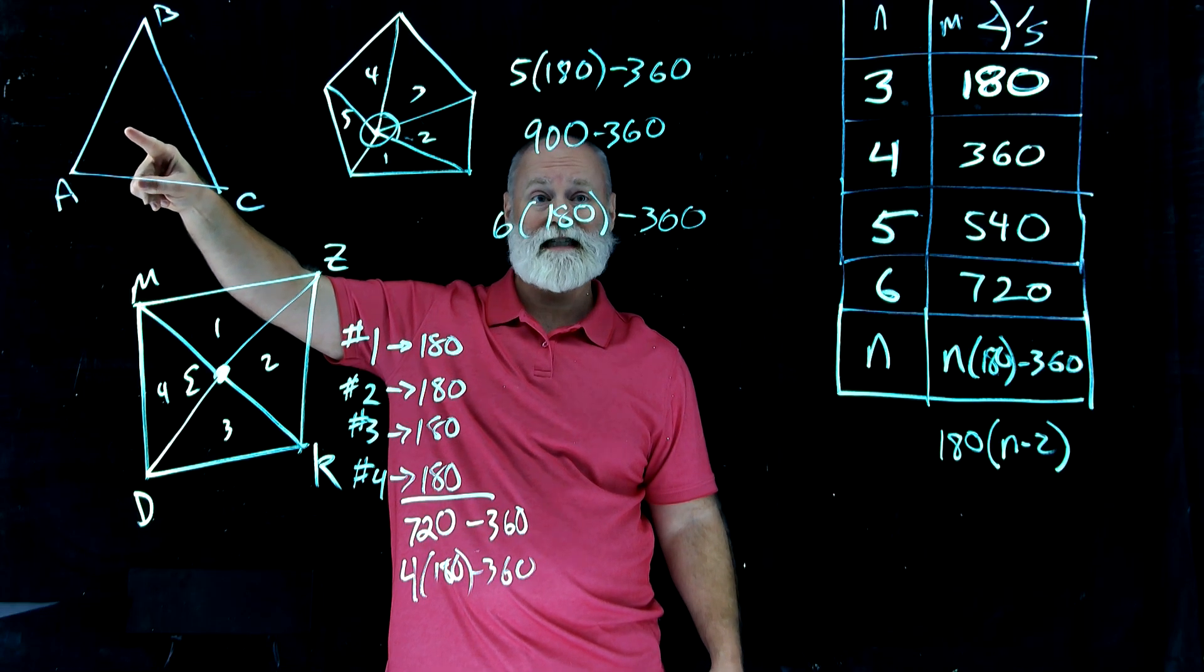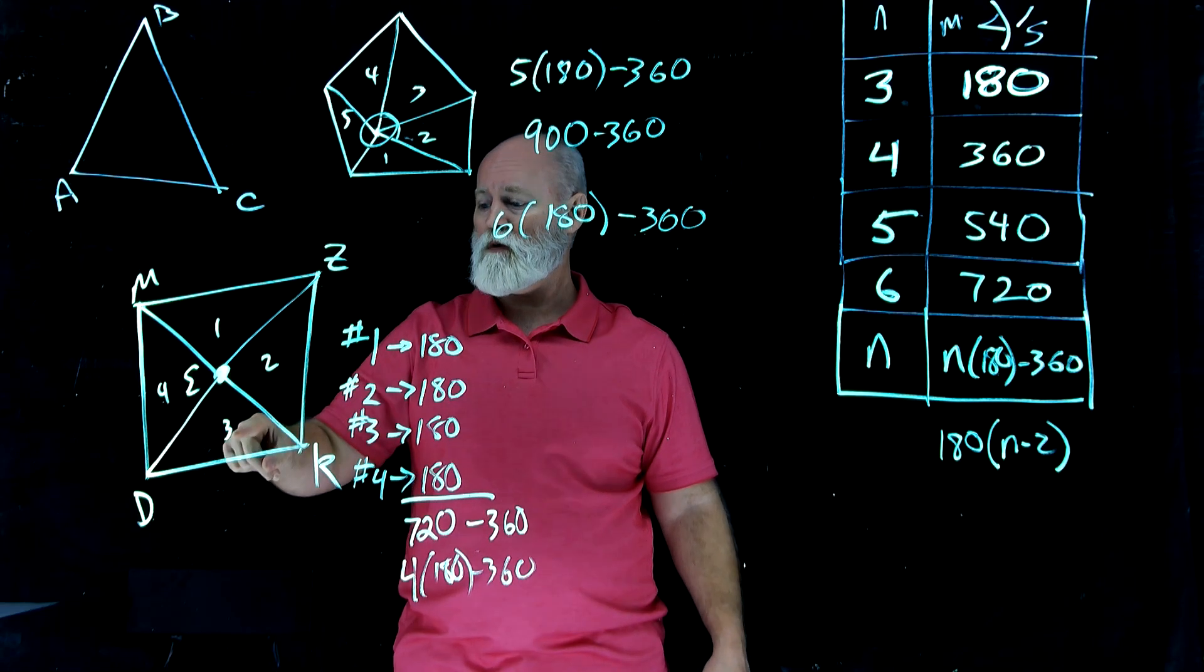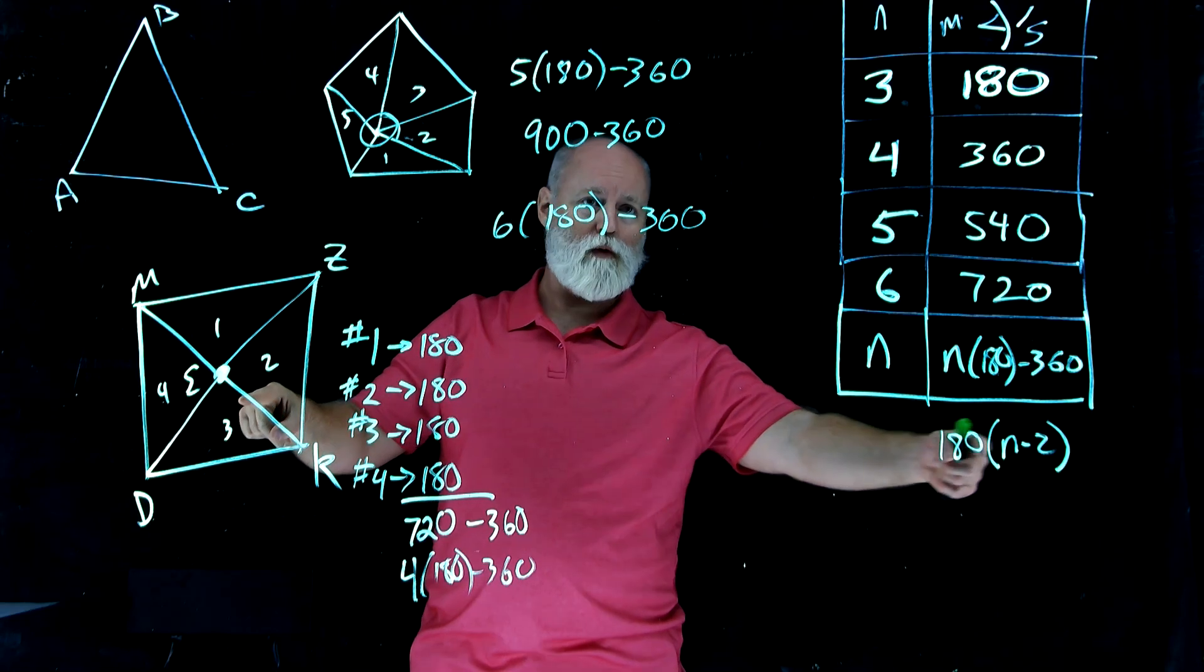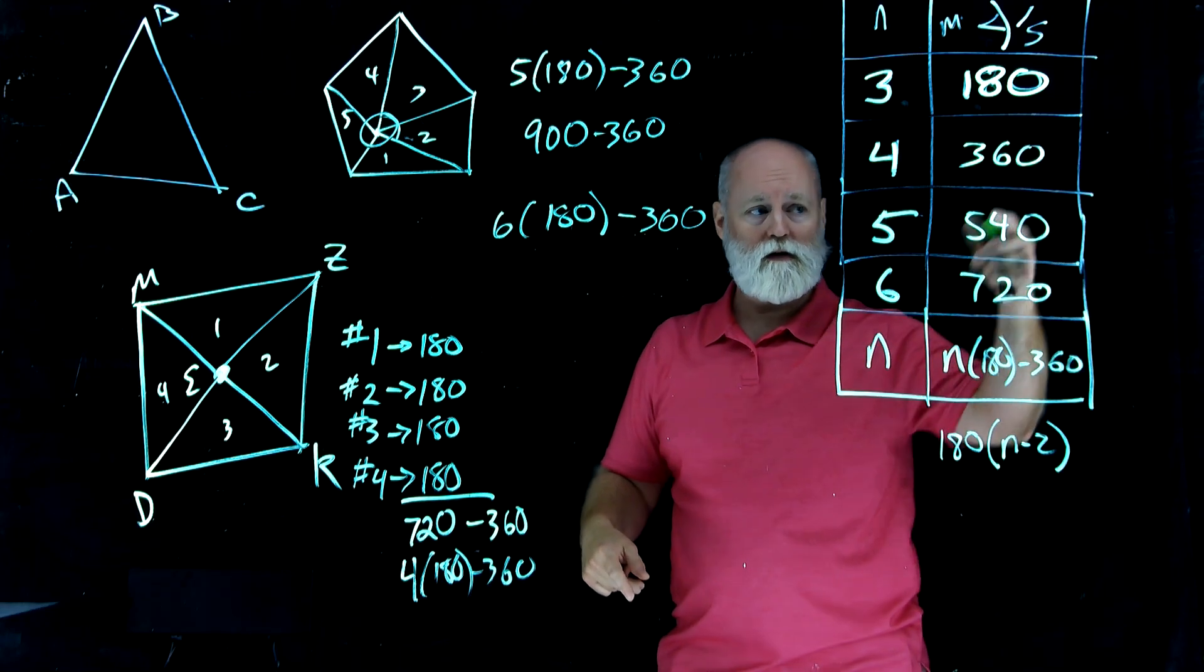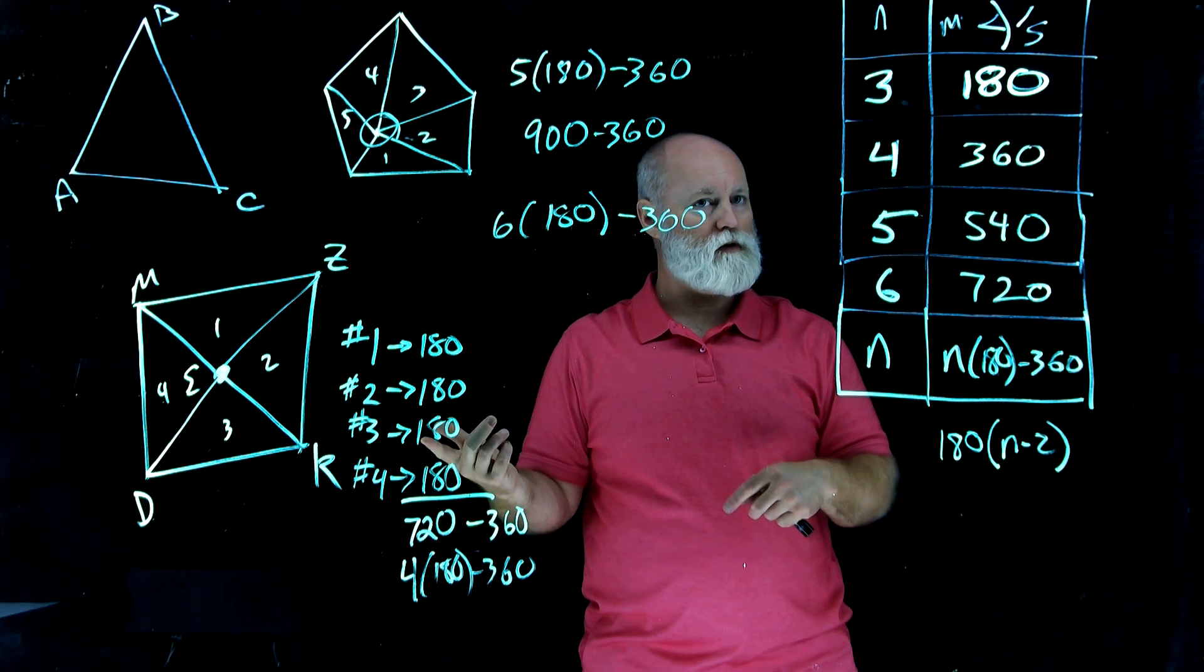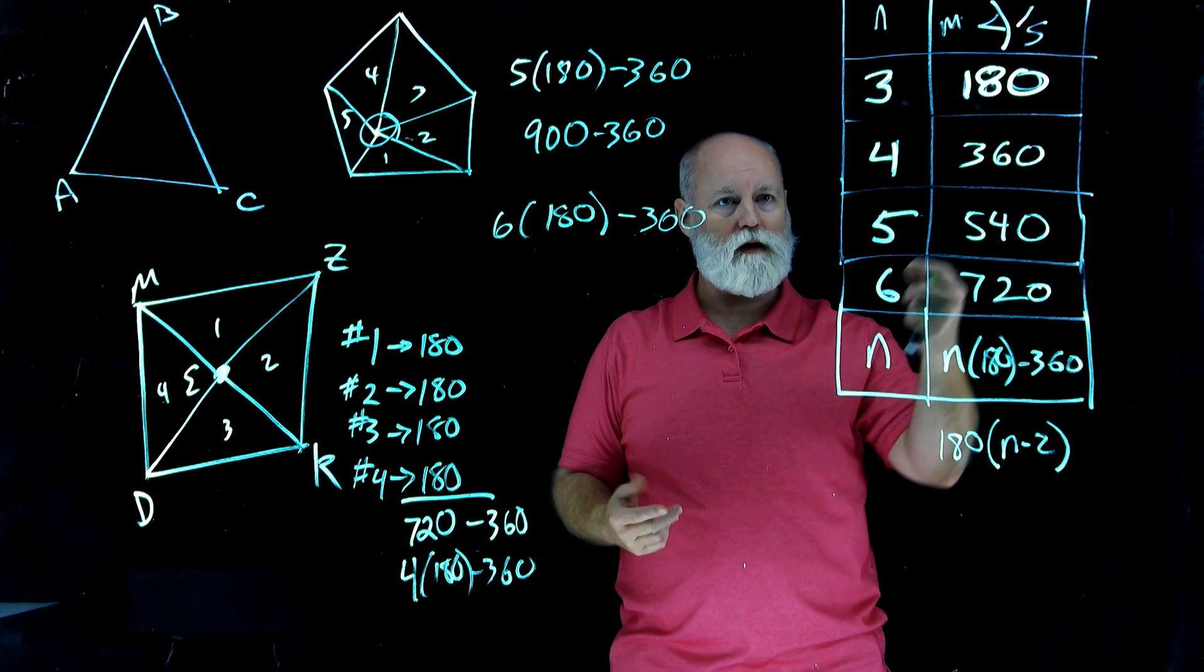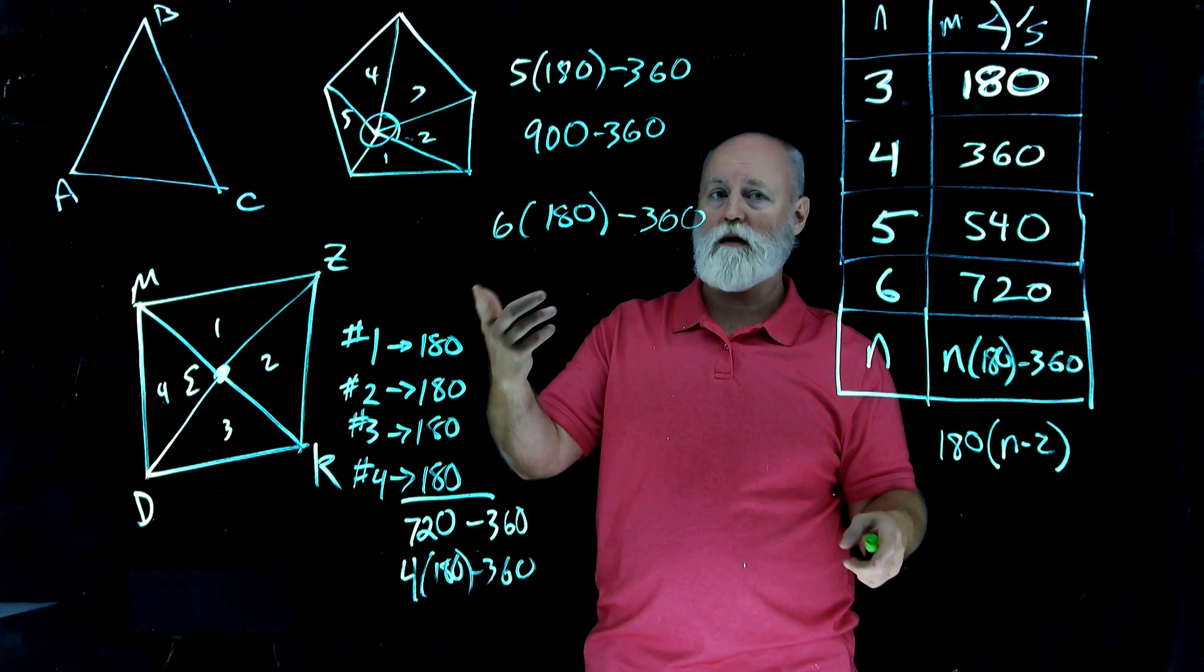But think about what we have over there. We have three sides. 3 minus 2 is 1. 1 times 180 is 180. We have four sides. 4 minus 2 is 2. 2 times 180 is 360. 5 sides. 5 minus 2 is 3. 3 times 180 is 540.